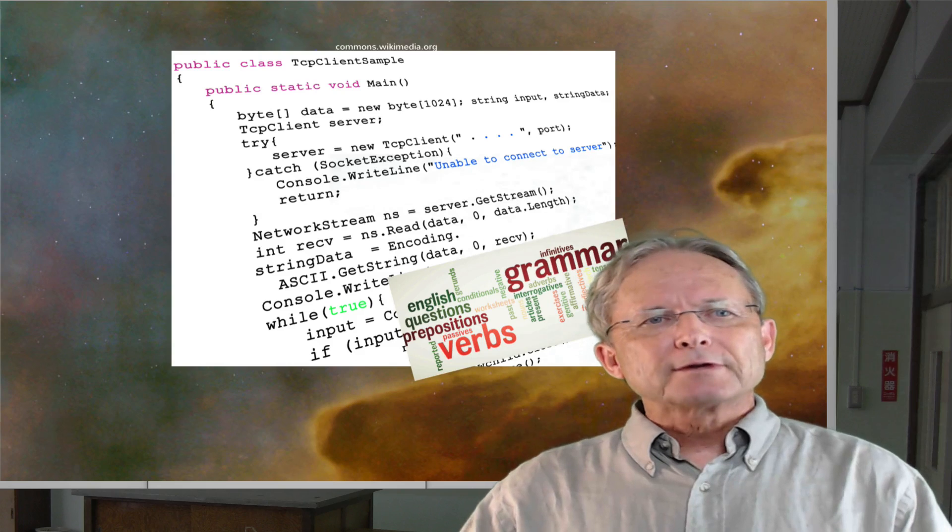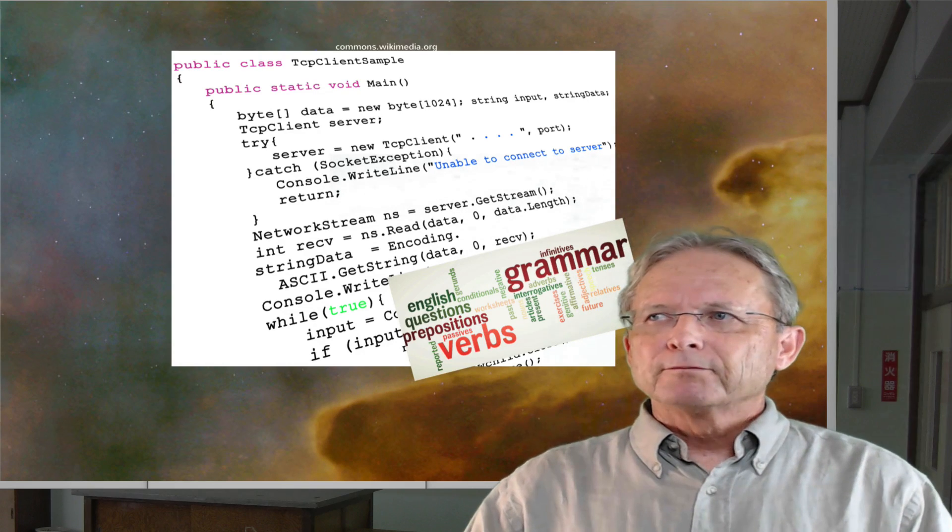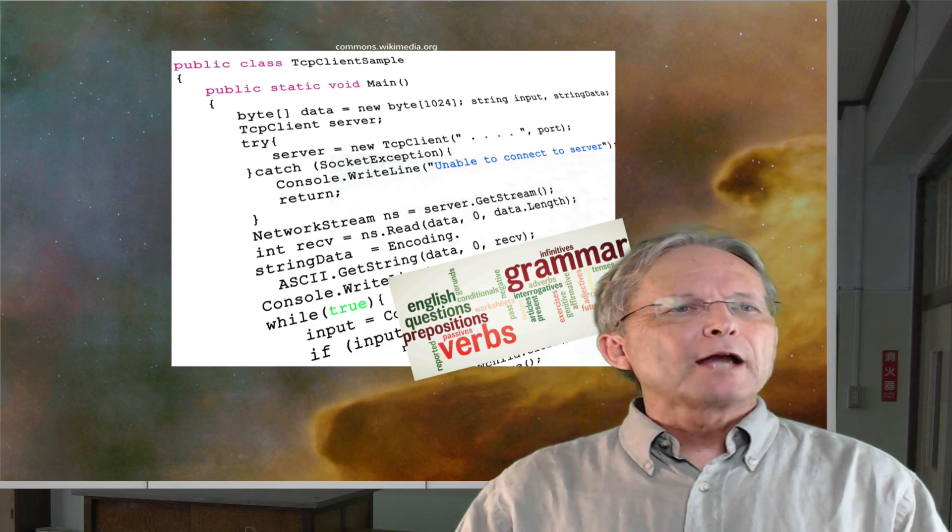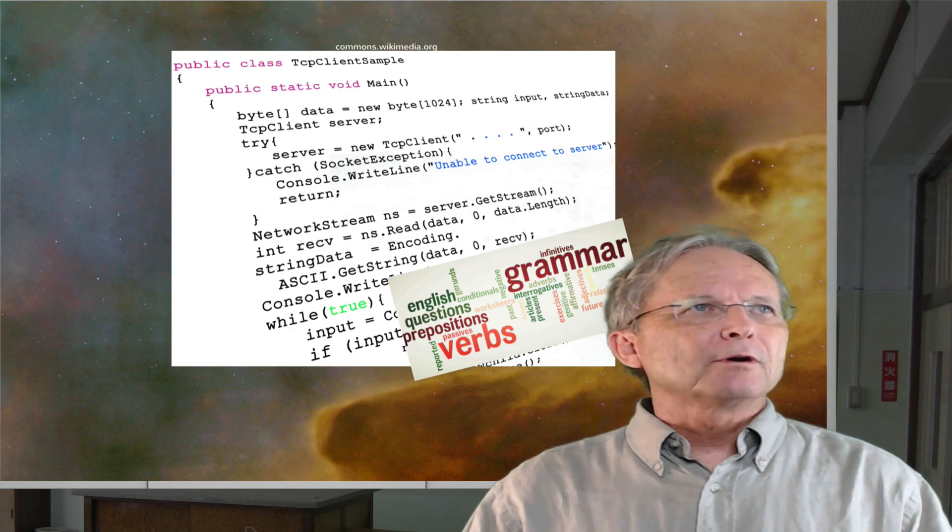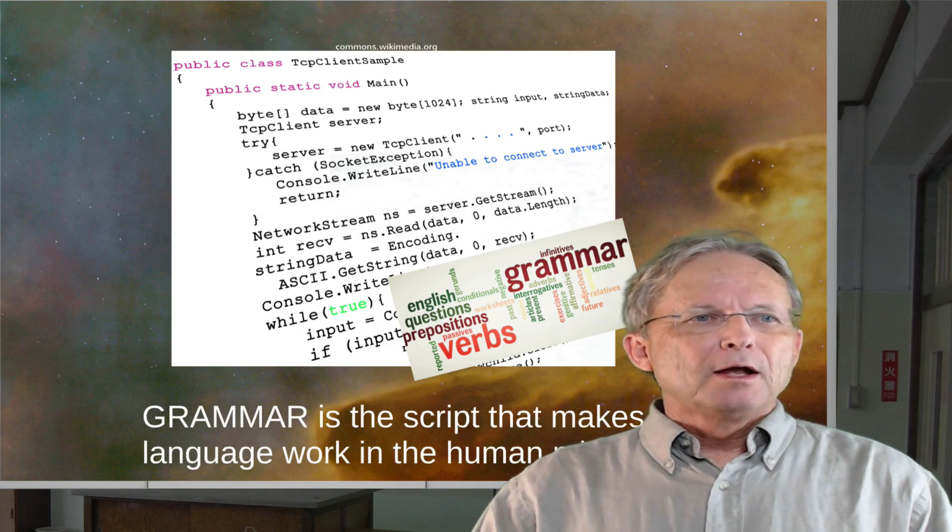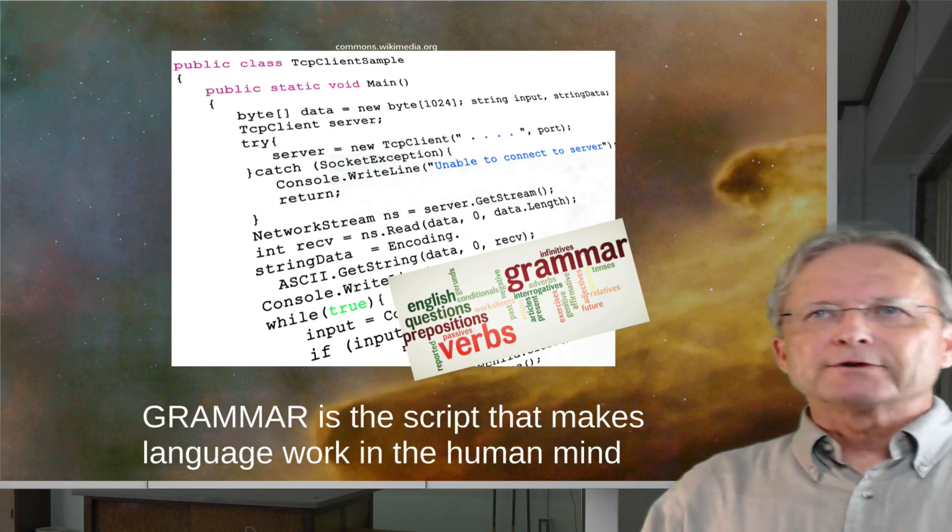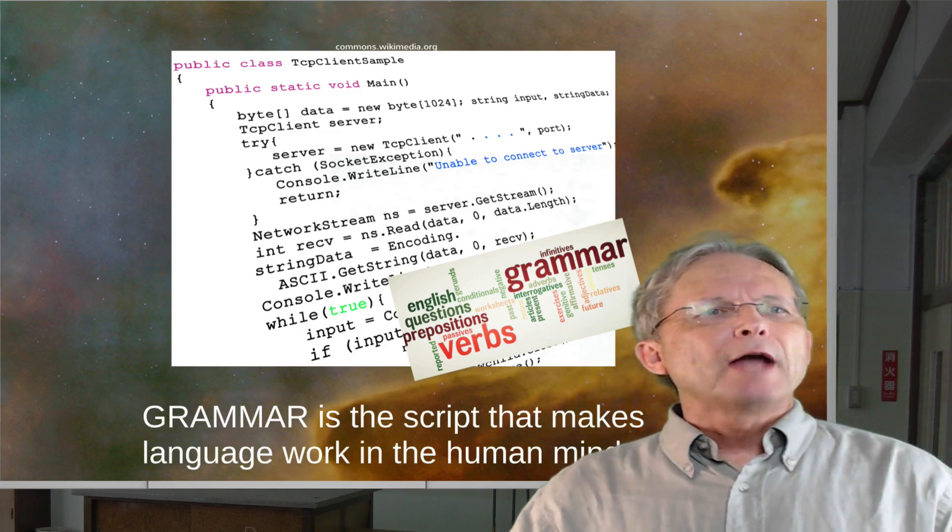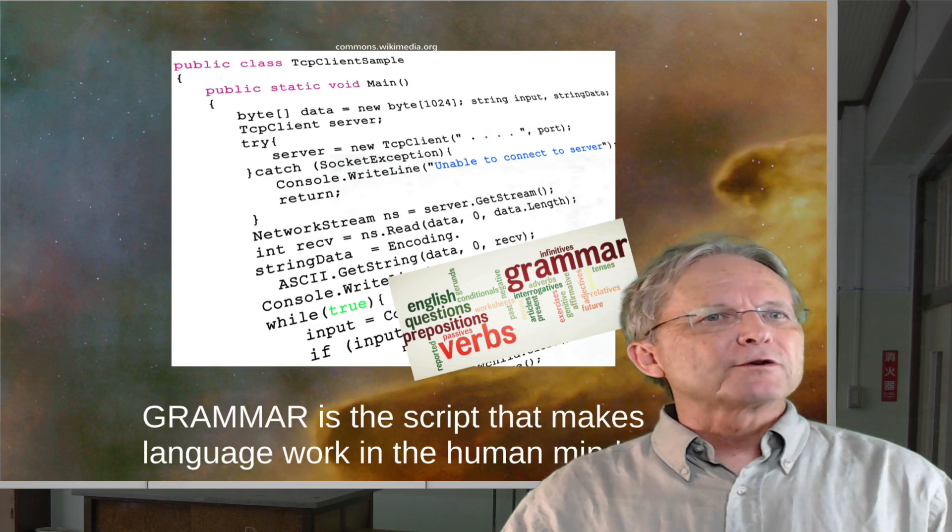The script that makes language possible in a computer is something like what we call the grammar of a language. The set of implicit rules, if you will, that people follow in order to say things in a given language and to understand what other people are saying.